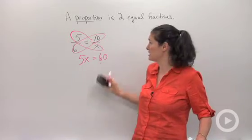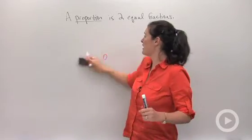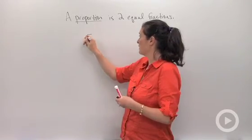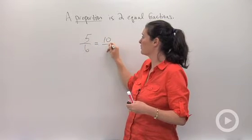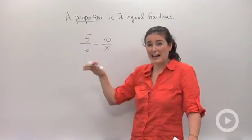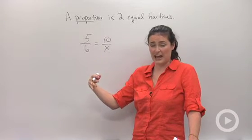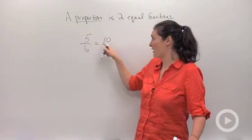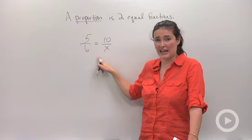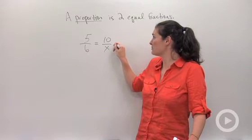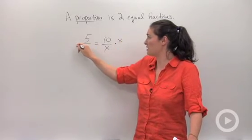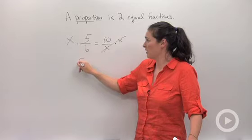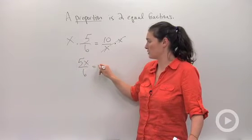Cross-multiplying is another good technique for solving proportions. The last method I want to show you is the one that makes most sense to me mathematically. What I would want to do is try to undo what's happening to x, just like I would with solving an equation. Right now I have 10 divided by x, so if I wanted to get x out of the denominator, I would multiply both sides of the equation by x so that those cancel out.